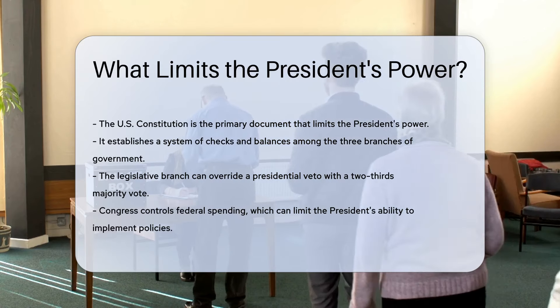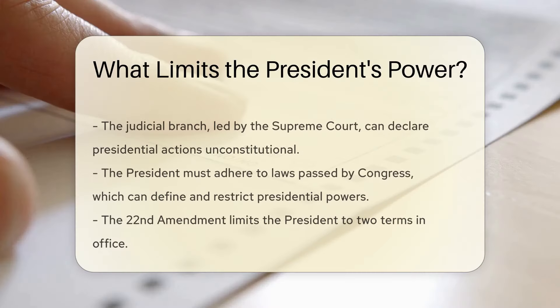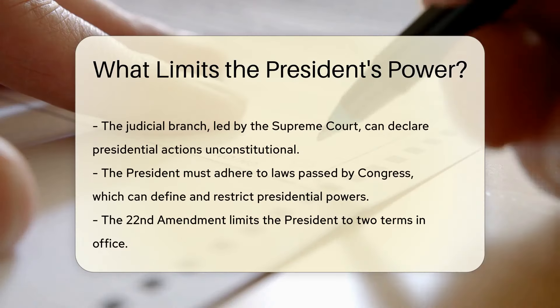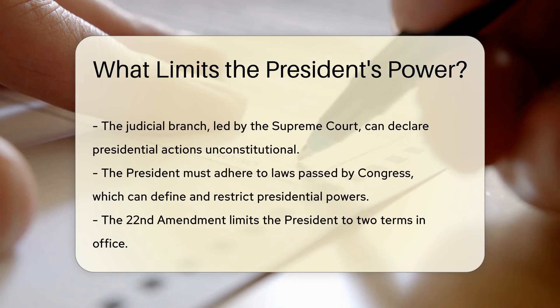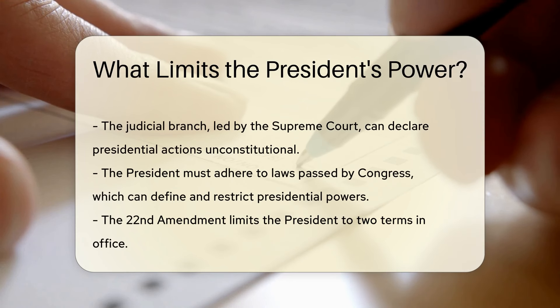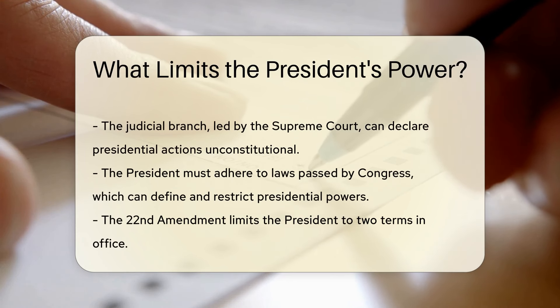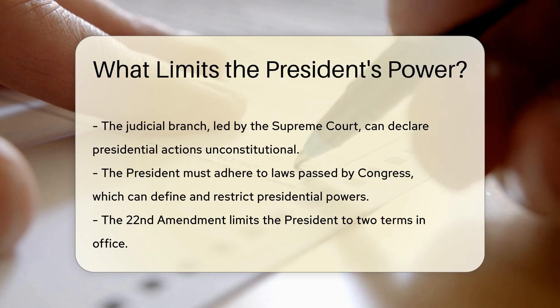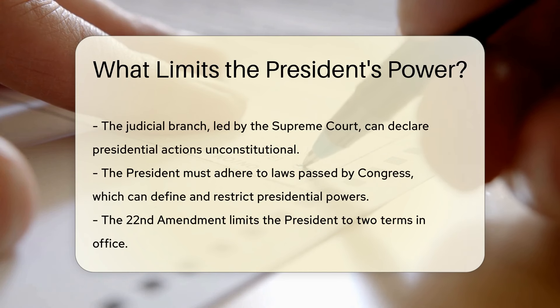The judicial branch, led by the Supreme Court, can declare presidential actions unconstitutional. This ensures that the President cannot act beyond the powers granted by the Constitution.